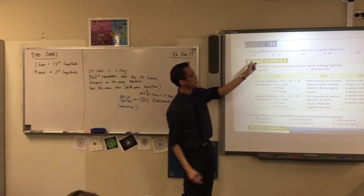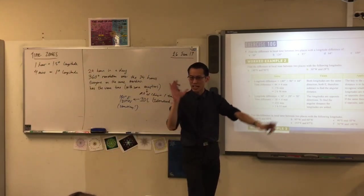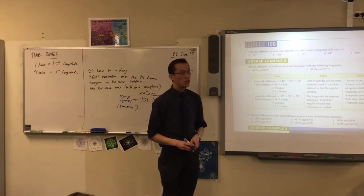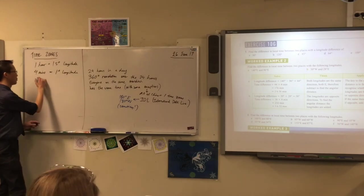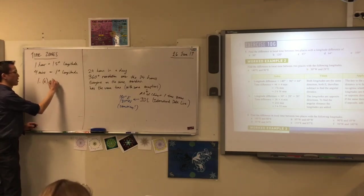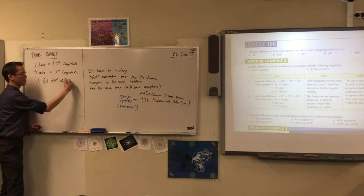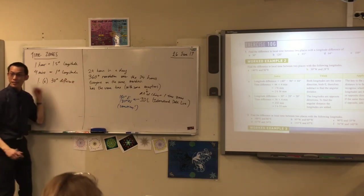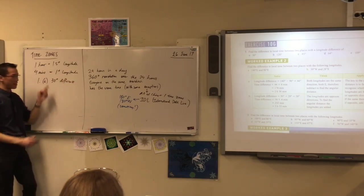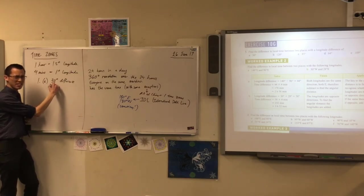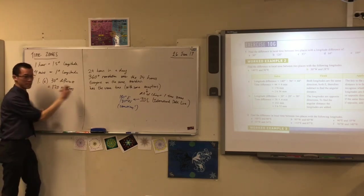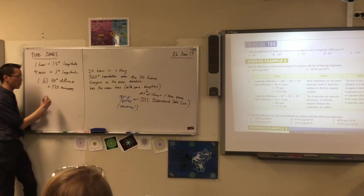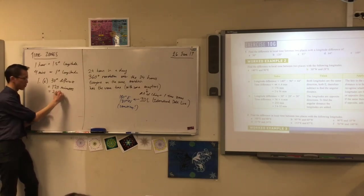So have a look. Simple question. It says find the difference in local time. By the way, you need your calculators for this. Between two places with a longitude difference of whatever. So let's do the first couple. 1A, 30 degrees of difference, right? Every degree gives you 4 minutes. So this is going to be equal to how many minutes? 120 minutes. We generally want everything, because of the scale we're working on, we generally want it to be an hour, so that's two hours. It's not so hard.